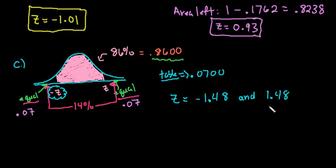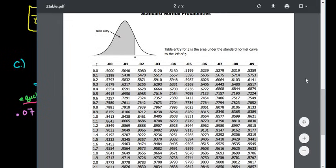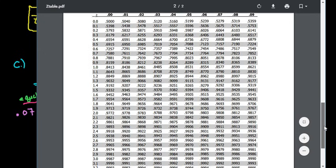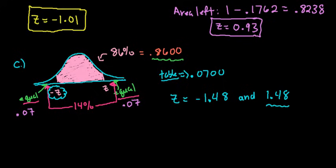The other option that we could have done just to show you how I could have also found this one first is the area to the left of the positive z is the 7% plus the 86% or .9300. So I could have also gone to the positive z score side and looked for an area that corresponds to .9300. So if I look through, I still want to see those top numbers. .9300 would be somewhere in between these values right here, the .9292 and the .9306. And if you notice, that is the 1.4. It's slightly closer to this one, 8. So we get the same thing either way.